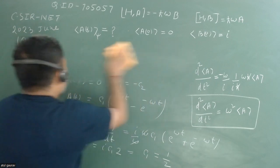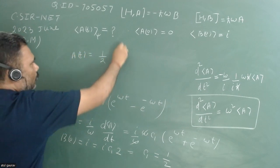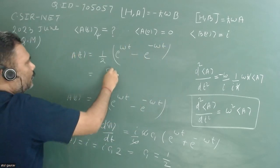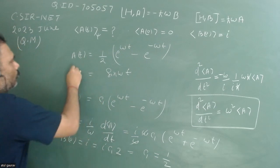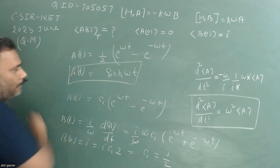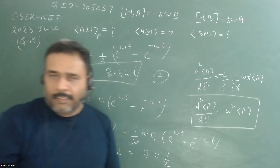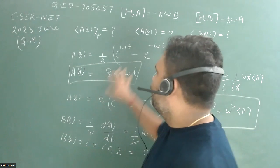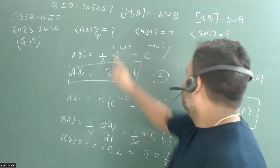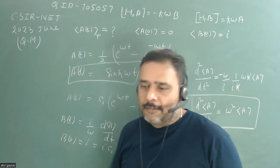Substituting C₁ = 1/2, we get ⟨A(t)⟩ = (1/2)(e^(ωt) − e^(−ωt)), which is exactly sinh(ωt). So ⟨A(t)⟩ = sinh(ωt) is the complete solution, and answer option 2 is correct. Always keep in mind that the differential equation has real exponentials, not e^(iωt) — otherwise you would incorrectly get sin(ωt).